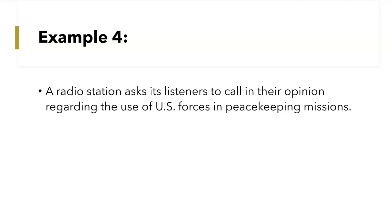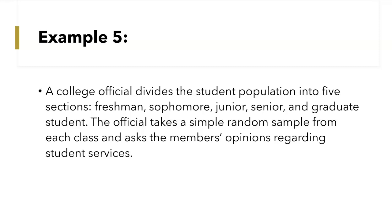Next example: a radio station asks its listeners to call in their opinion regarding the use of U.S. forces in peacekeeping missions. Since people have to call in themselves, self-selecting to participate, this is a convenience sample — in particular, self-selected. Next example: a college official divides the student population into five sections — freshman, sophomore, junior, senior, and graduate students — then takes a simple random sample from each class and asks their opinions regarding student services. Since the population is broken into groups and a random sample is taken from each group, this is stratified sampling.